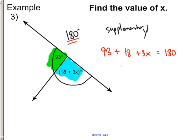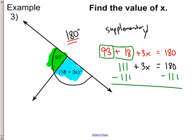Now let's solve. Can I add 93 to the 18? I sure can. That equals 111 degrees. I can't add the 111 to the 3x because the 3 has an x on it. Now we can subtract 111 from both sides. 3x is going to equal 69. Now we can divide, and x is going to be 23.